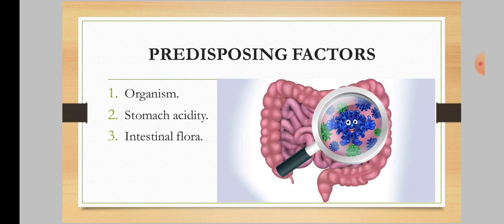Predisposing factors: First, organism — a large number of organisms have to be ingested by a healthy person to suffer from typhoid; smaller inocula may produce disease if organisms are very virulent or host resistance is poor. Second, stomach acidity — the acid in the stomach destroys Salmonella that is ingested; hence patients with no stomach acid or who take large amounts of antacids suffer more often from typhoid.